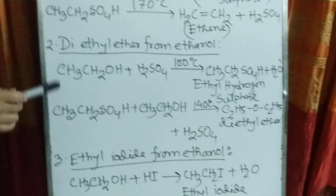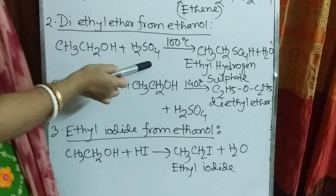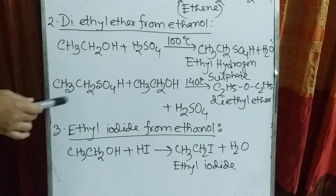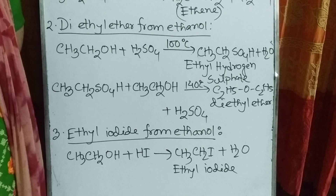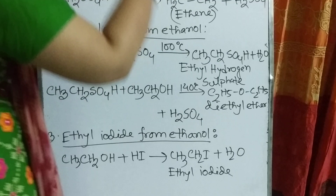Come to the second property. We prepare diethyl ether from ethanol. When ethanol reacts with sulfuric acid at 100 degrees Celsius, it forms ethyl hydrogen sulfate, which reacts with excess ethanol at 140 degrees Celsius and produces diethyl ether.